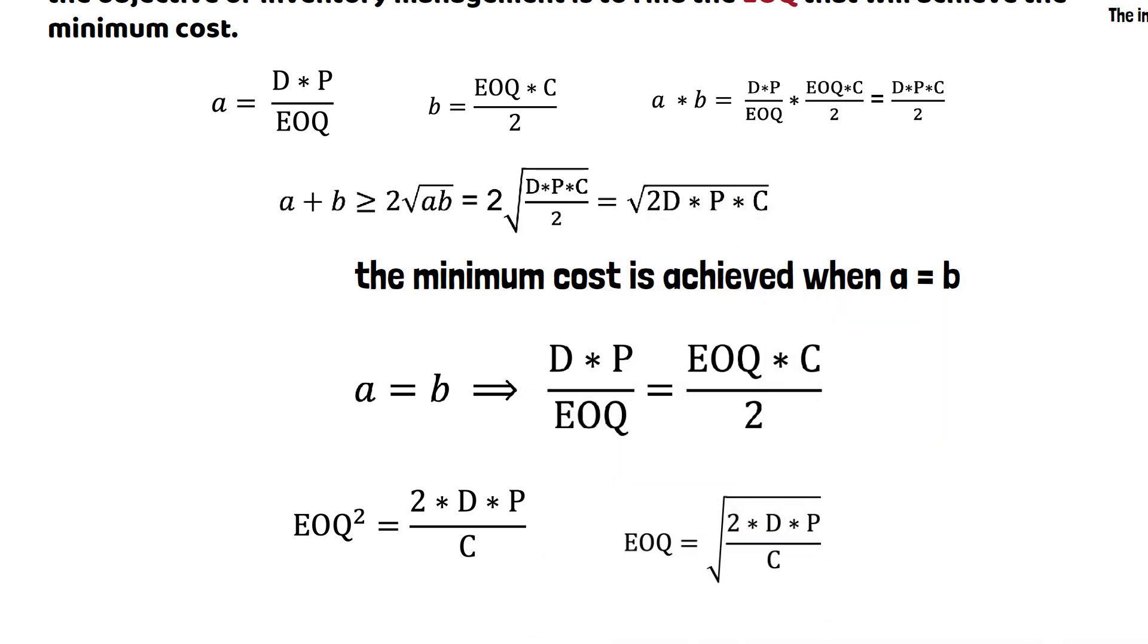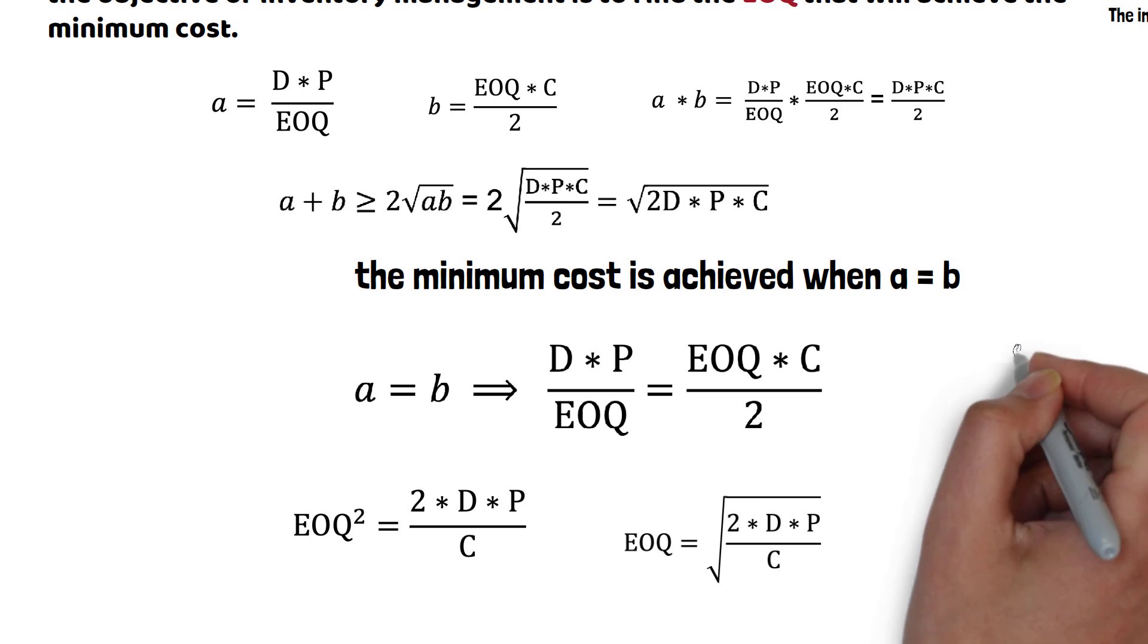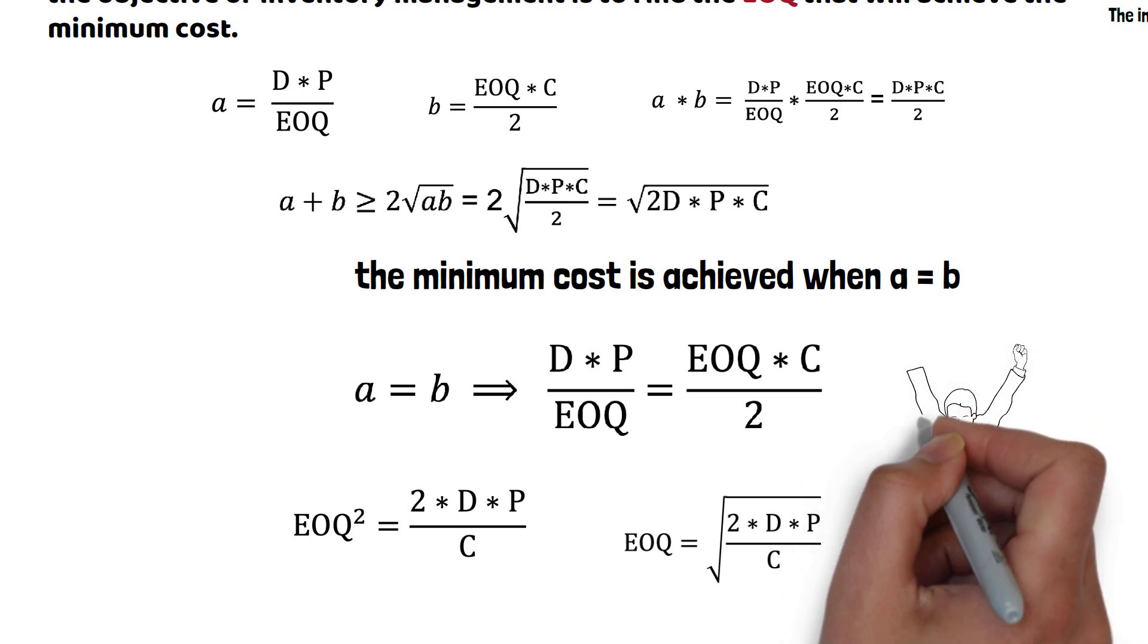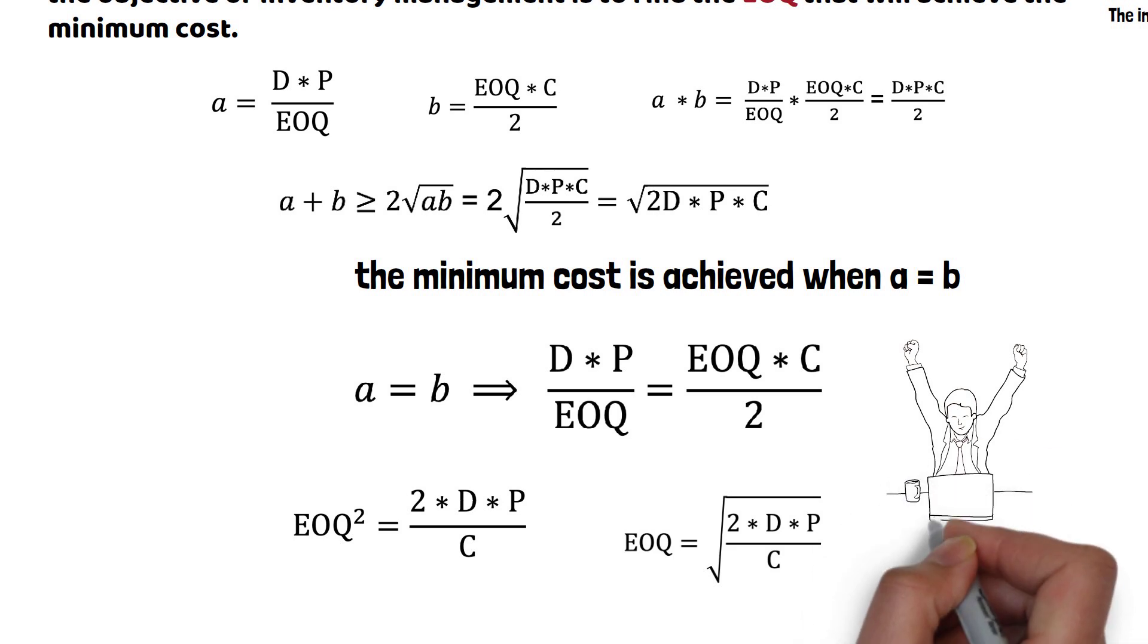So EOQ equals the square root of 2DP divided by C. We have proved that formula is correct.